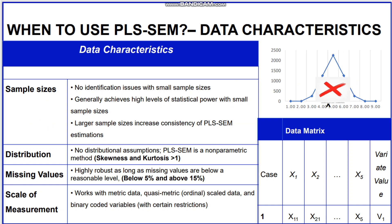The data distribution can also be non-normal and PLS-SEM is a non-parametric method. If data are not normally distributed we can use PLS-SEM, and the scale of measurement should be metric. The data should be available in a format of rows and columns, and it also accepts missing values below 5%. Basically the two most important characteristics are: no requirement of normal distribution, and data must be in metric format.